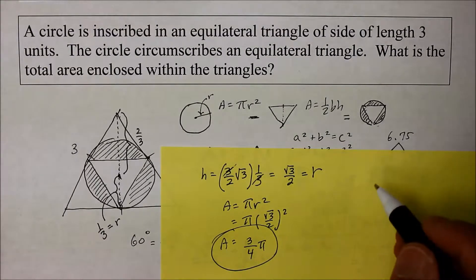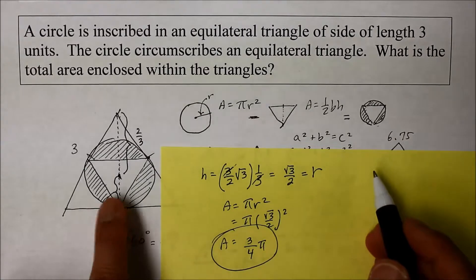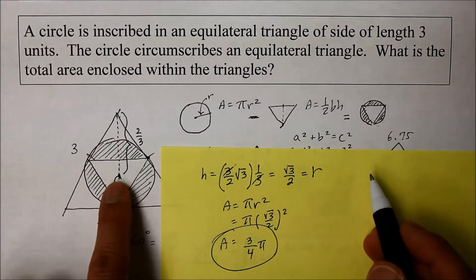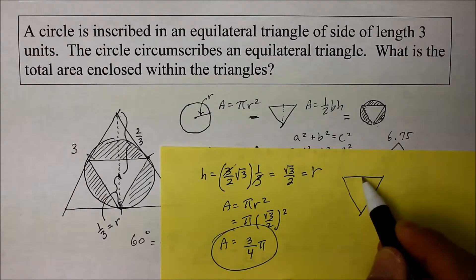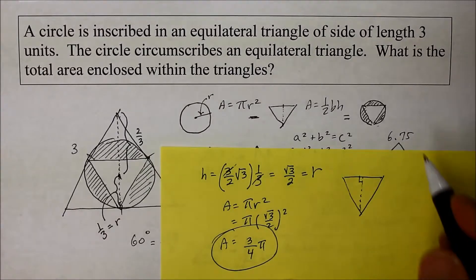Now I'm going to find the height of the triangle, the small triangle. Because I need to subtract that away from the big circle. Now how do I do that? How do I find the altitude of that small triangle? Well, here's what we know.